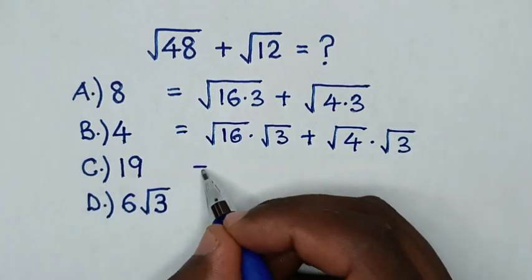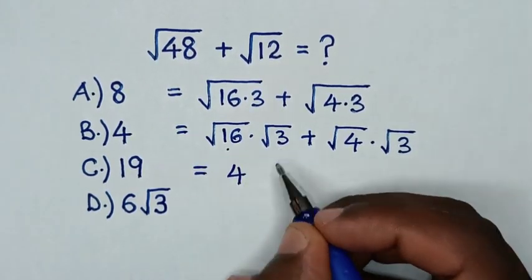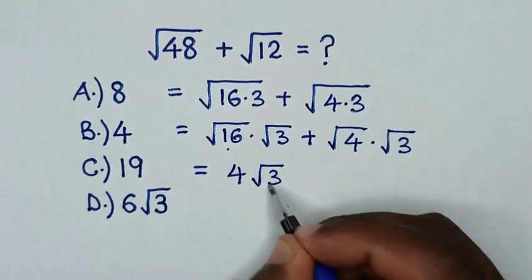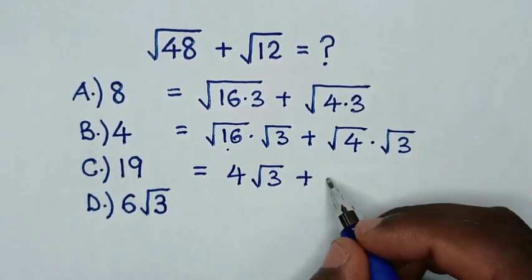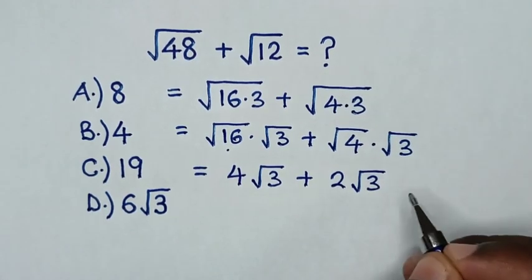Then it will be equal to square root of 16 is 4, times square root of 3, then plus square root of 4 is 2, times square root of 3.